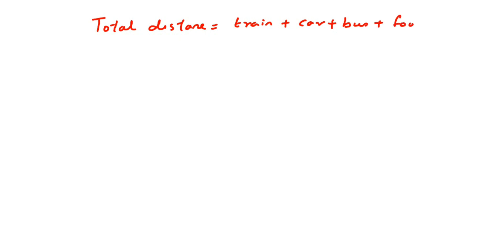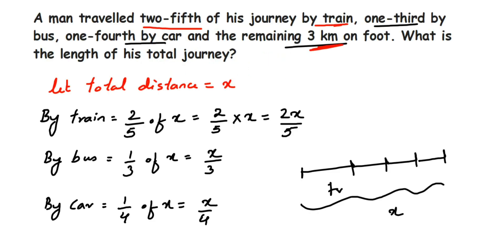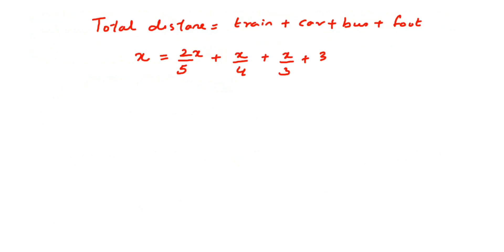So total distance x equals the distance by train — two x by five — plus by car x by four, plus by bus x by three, plus the remaining three kilometers. So the equation is: two x by five plus x by four plus x by three plus three equals x.